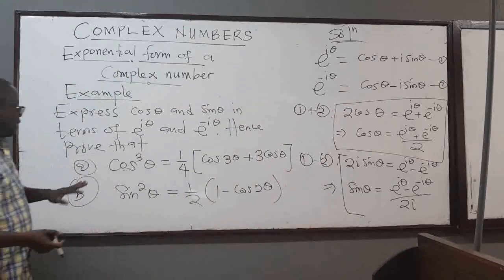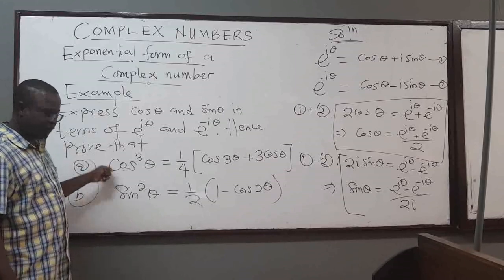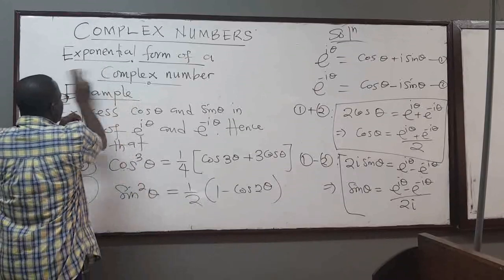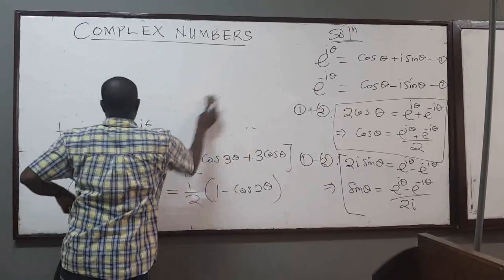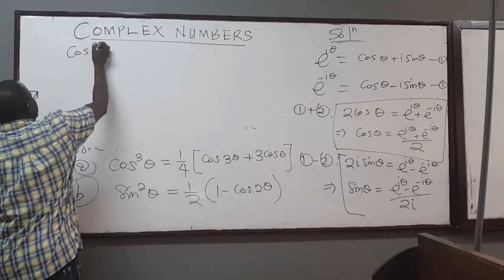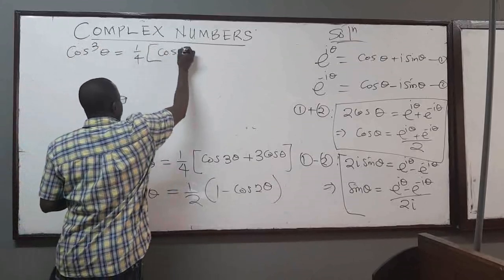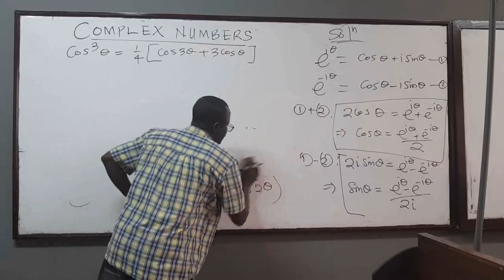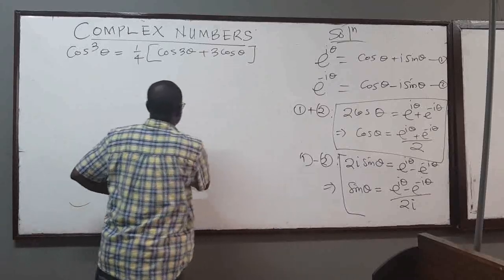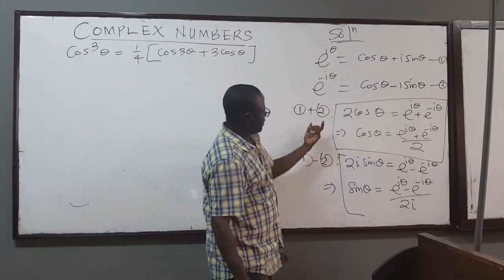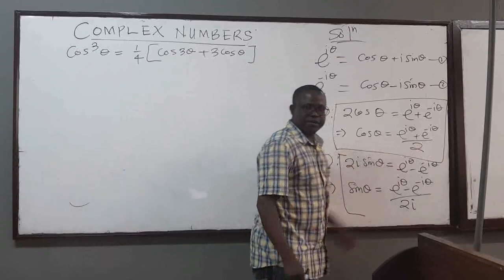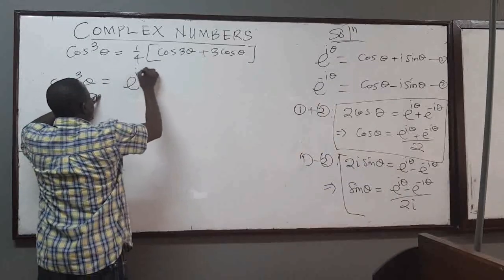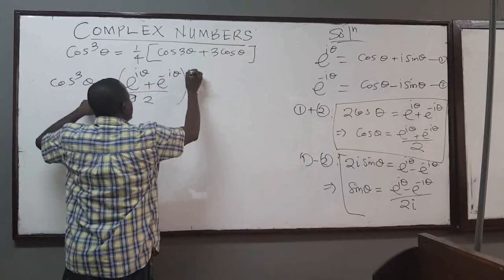Now that we have these relations, we use them to prove the identities. We want to show that cosine cubed theta equals one quarter times cosine 3 theta plus 3 cosine theta. Using the exponential expression for cosine theta, cosine cubed theta equals the quantity e to the i theta plus e to the negative i theta over 2, all raised to the power 3. This gives 1 over 8 times the quantity e to the i theta plus e to the negative i theta, raised to the power 3.